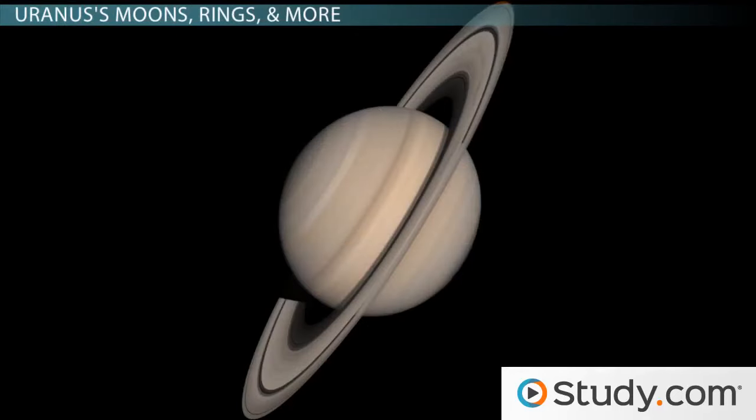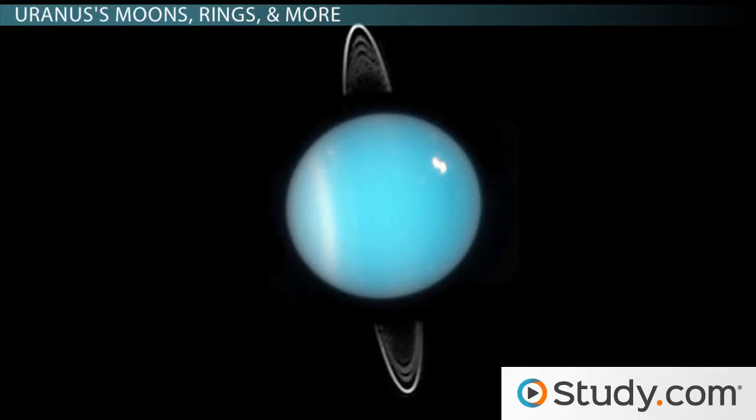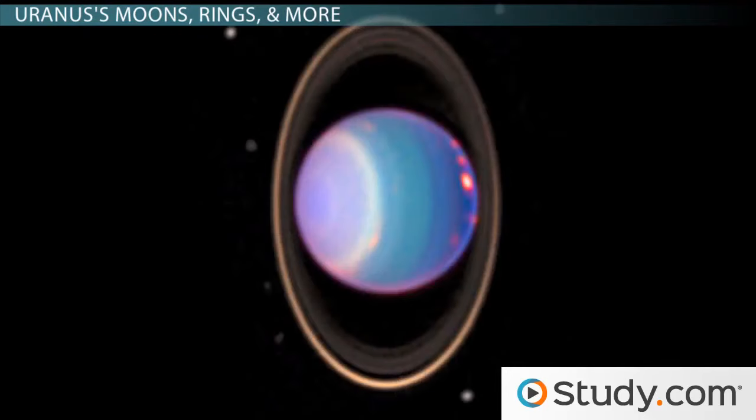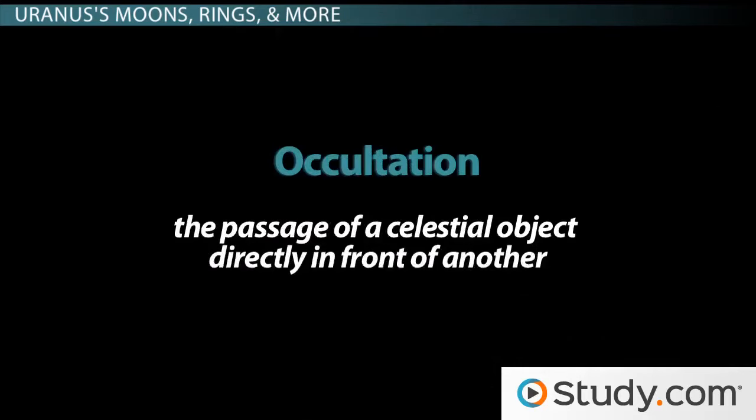Finally, like the famous Saturn, Uranus does have rings. However, they're not as easily seen from Earth as Saturn's. These rings were discovered thanks to something known as Occultation. This is the passage of a celestial object directly in front of another.